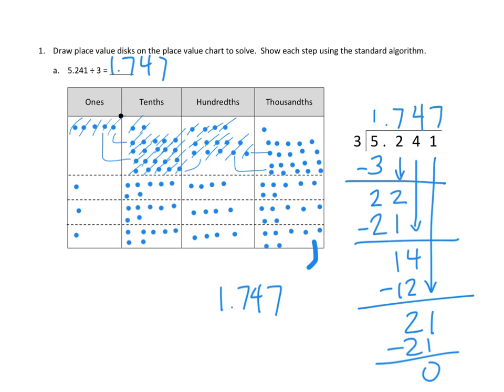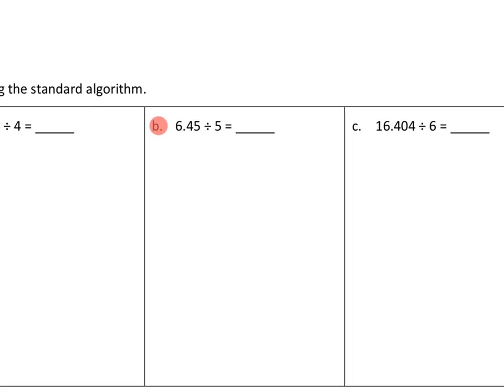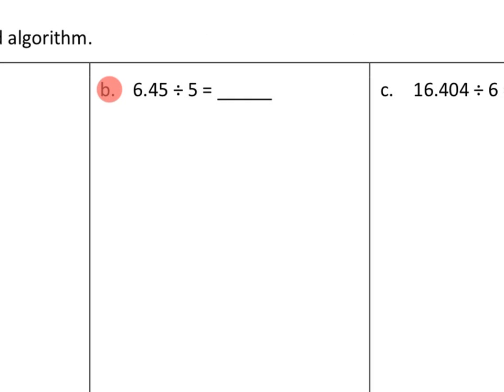Let's take a look at one more problem tonight — problem number two. It asks us simply to solve using the standard algorithm. I'm going to do 2B: 6.45 divided by 5. We set up the dividend 6.45 underneath the division bracket, the divisor 5 out front, and we figure out the quotient up top.